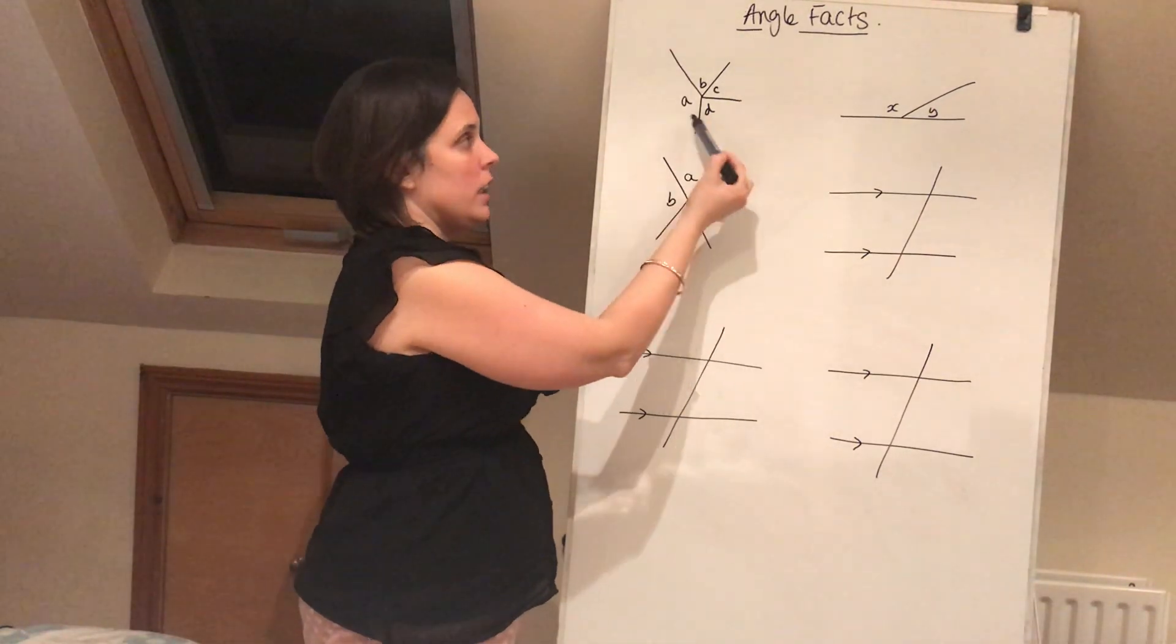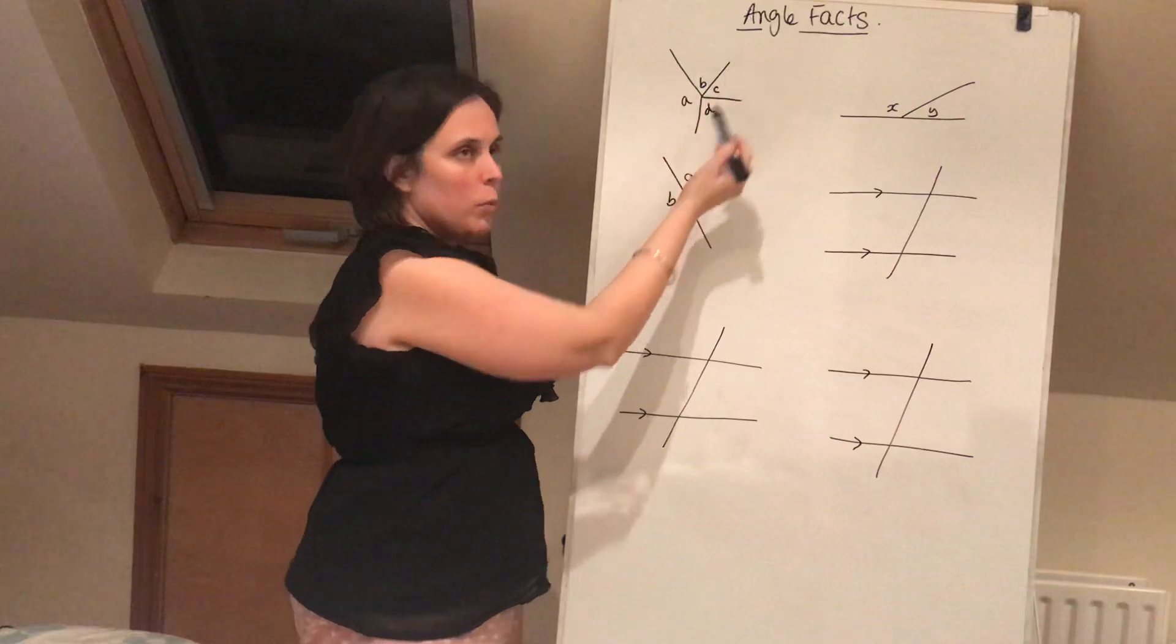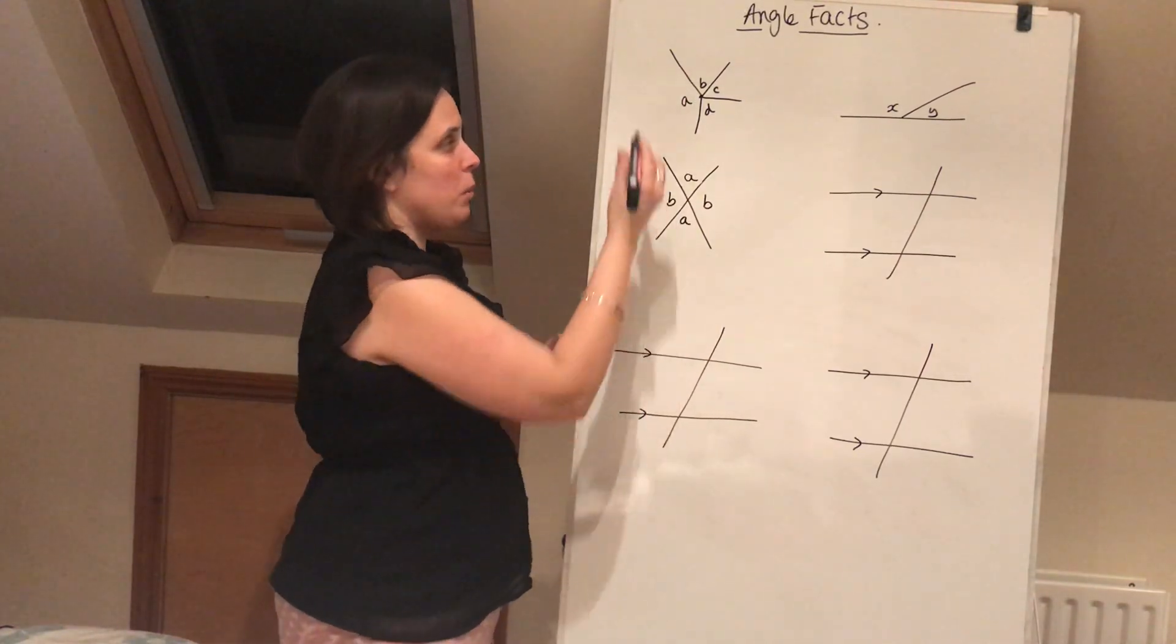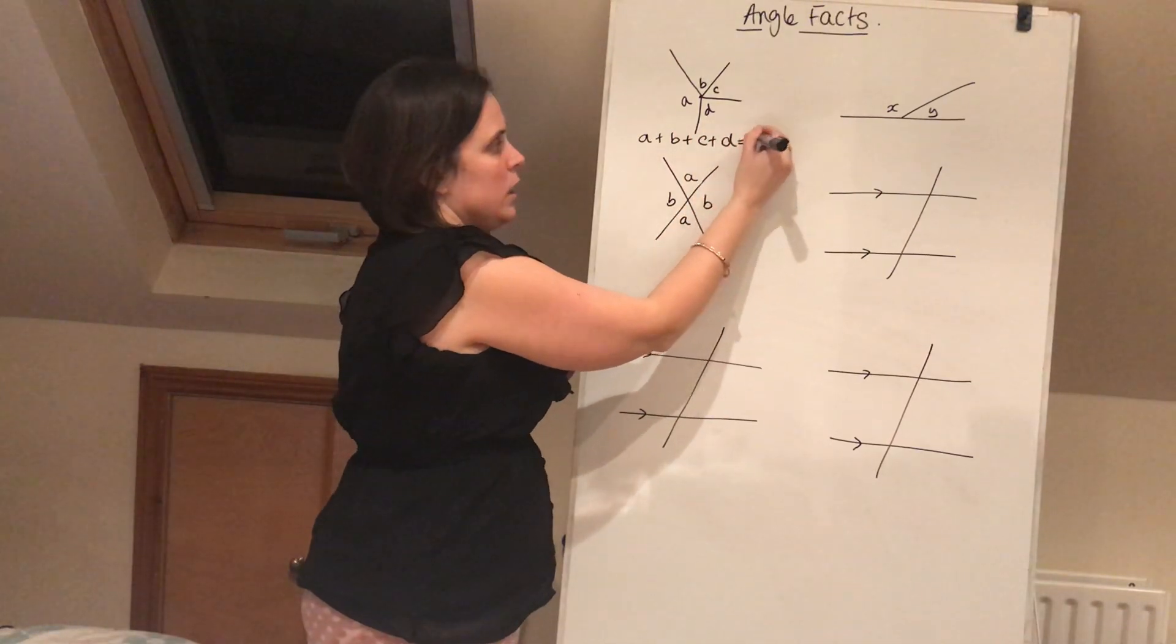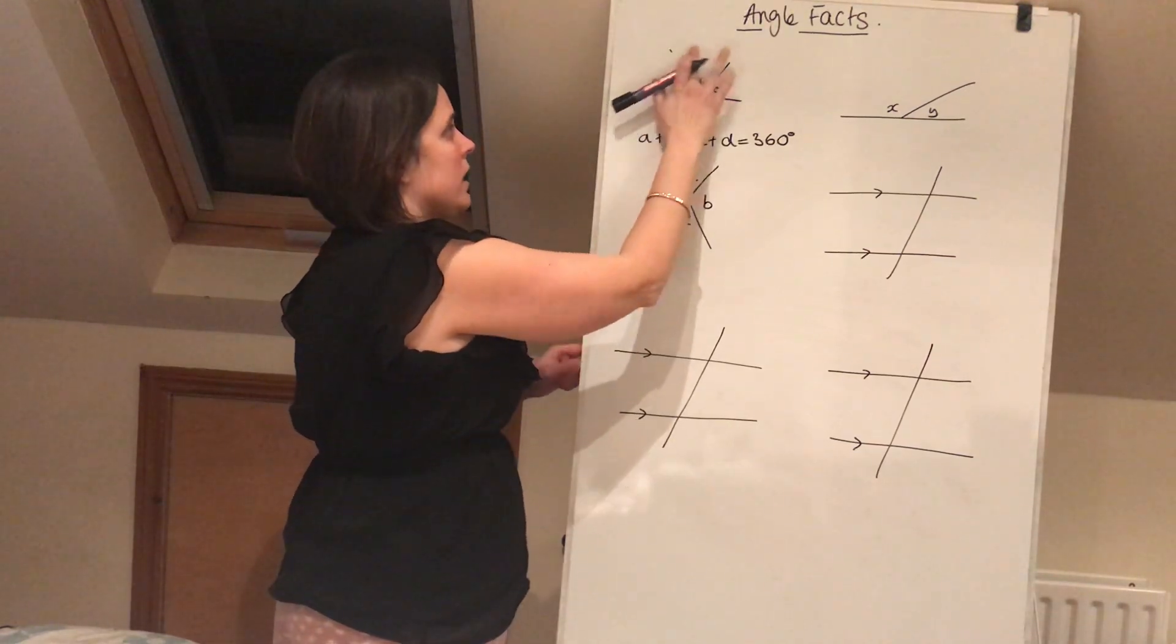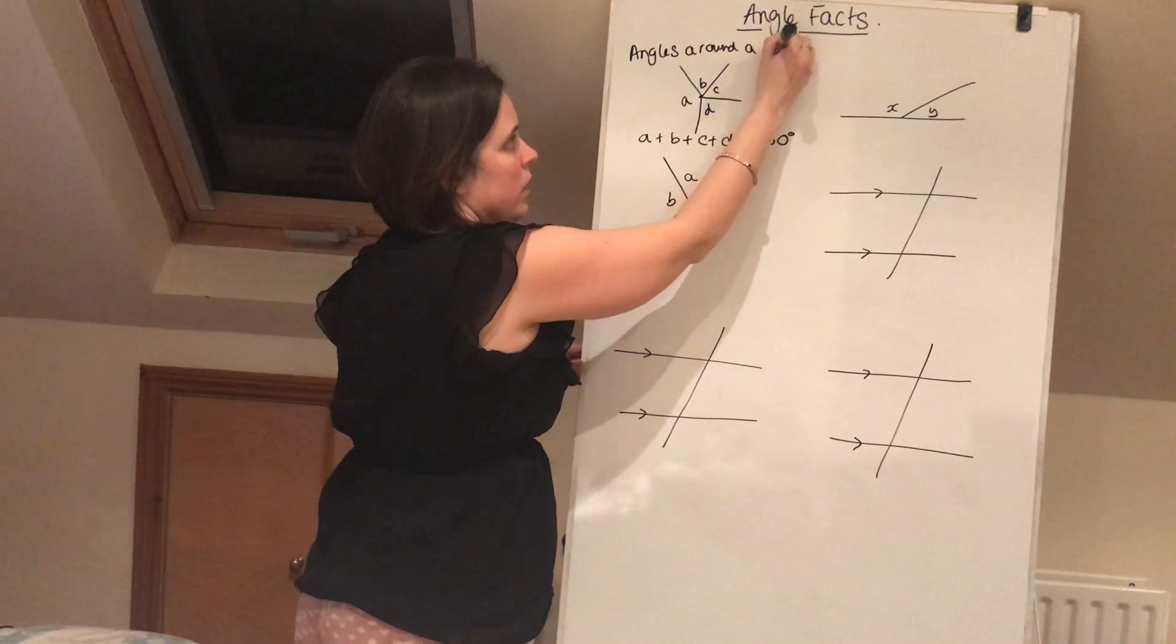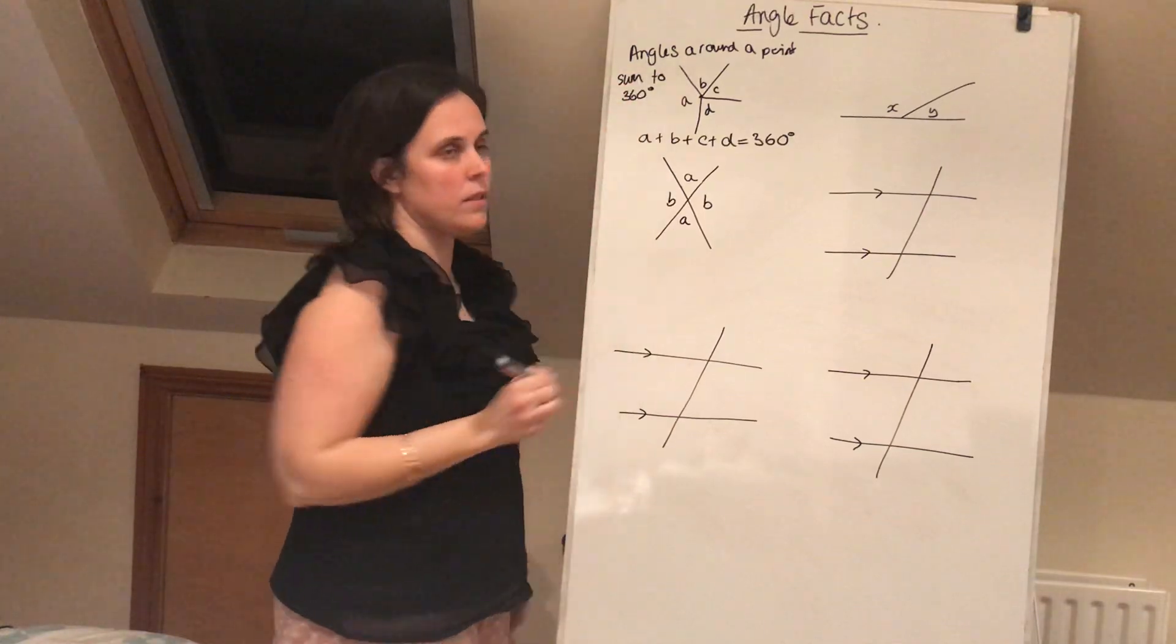So the first one here, I've got four different lines all coming off, and what we know about these is these are all angles A, B, C and D that are going around a point. And A plus B plus C plus D add up to 360 degrees. And what we basically say here is angles around a point sum to 360 degrees.